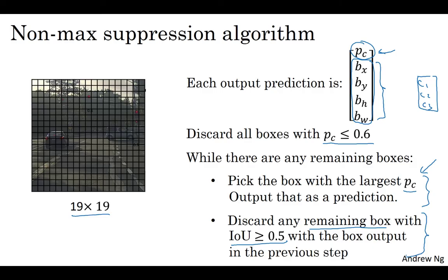And so you keep doing this while there's still any remaining boxes that you've not yet processed until you've taken each of the boxes and either output it as a prediction or discarded it as having too high an overlap or too high an IOU with one of the boxes that you have just output as a predicted position for one of the detected objects.